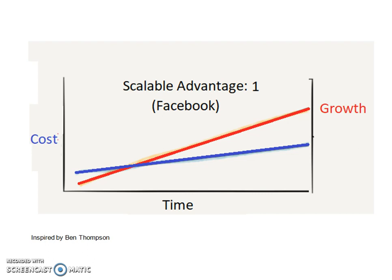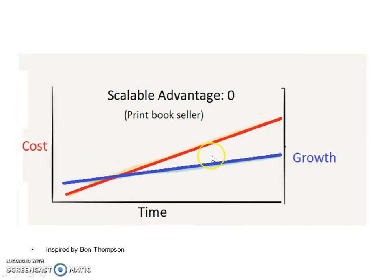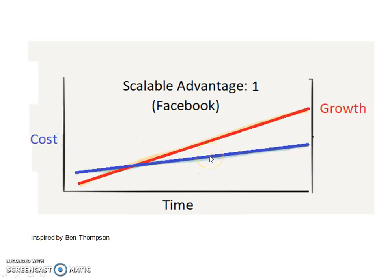But what happens when you have a scalable advantage of one — in other words, you become a company operating under aggregation constructs? Your cost can remain largely flat, not growing as fast, while your growth is high, because you are now enjoying a marginal cost advantage and following a new trajectory. Essentially, the experience flips: the red line becomes your growth while the blue line becomes your cost. When that happens, good things happen — the cost of adding an additional user is largely zero. The cost of Facebook adding additional users is insignificant; the cost of Google adding additional users is the same.